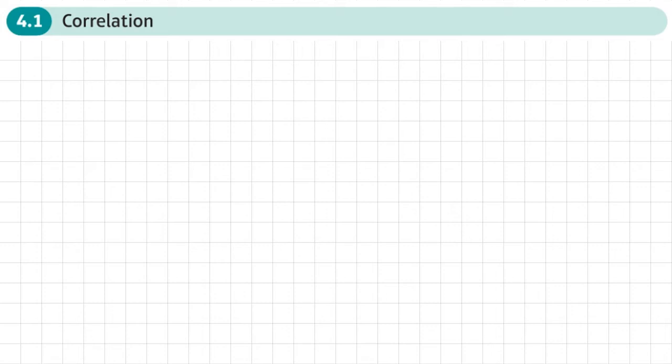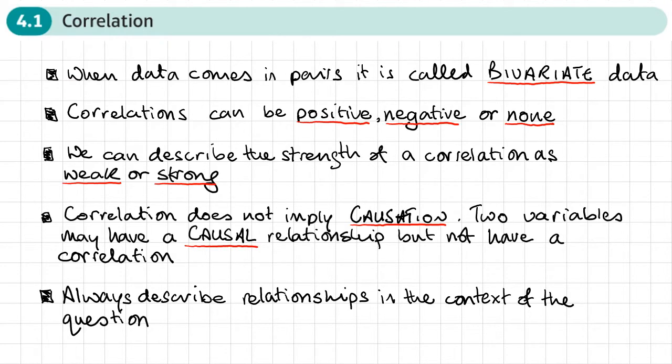This is the first section of chapter 4 on correlation, and this section is all about correlation. Let's go through what we need to know about correlation. When we do correlation, we know that the data comes in pairs. This is called bivariate data.